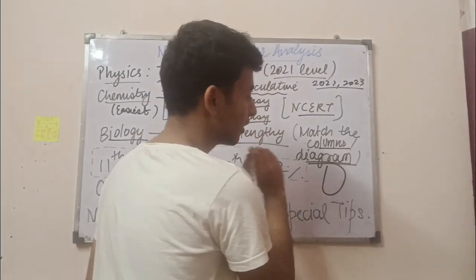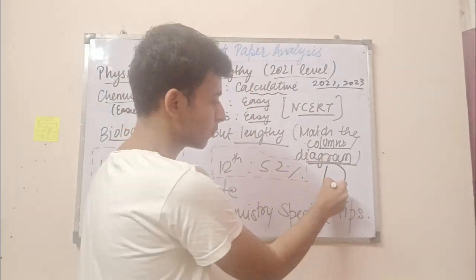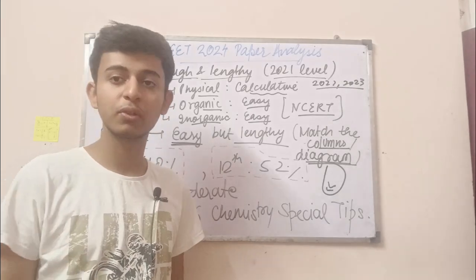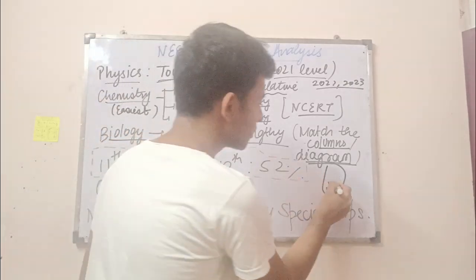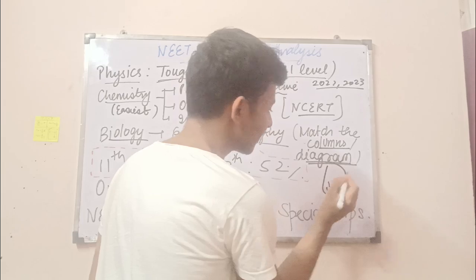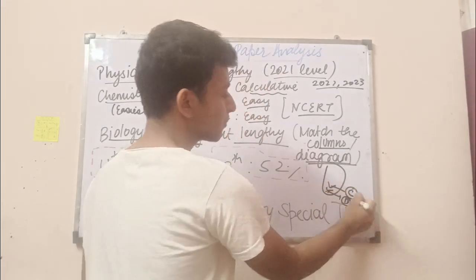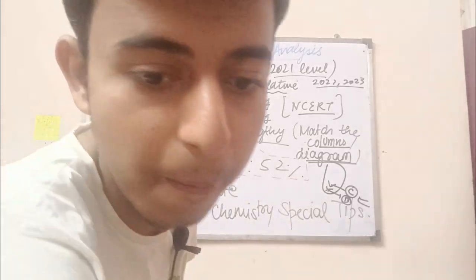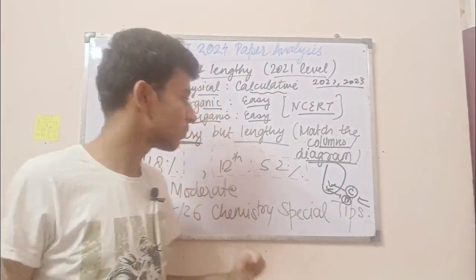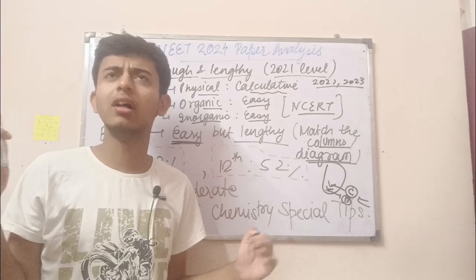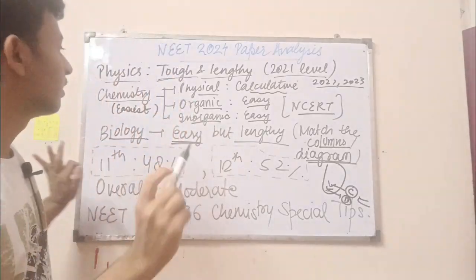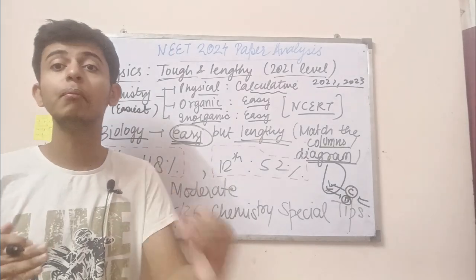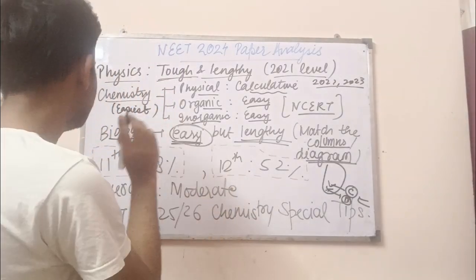For example, there was a coleoptile question — the monocot one — asking from which part the root arises. Students who studied morphology would identify the radicle, which was marked as C, and the coleorhiza marked as D, so the answer is C. There was also an FSH/LH diagram-based question, and many more related to wind pollination. So biology was easy but lengthy — doable, but requiring a little more time investment.